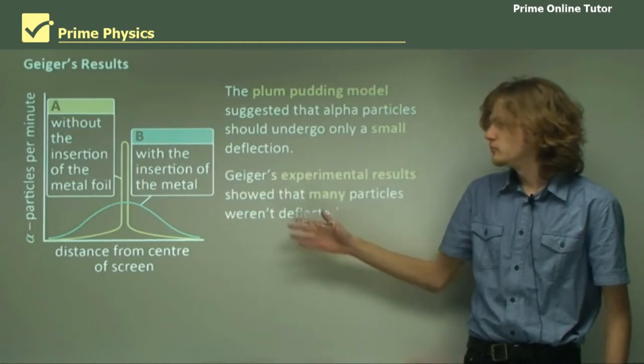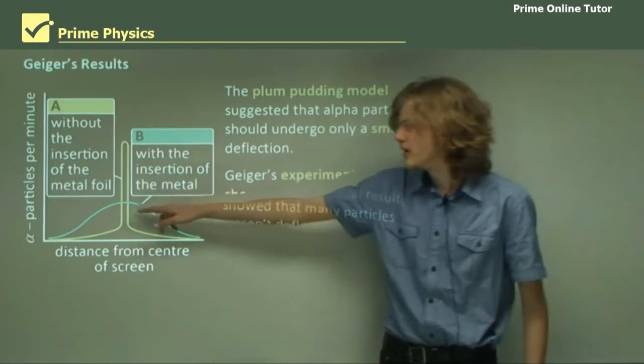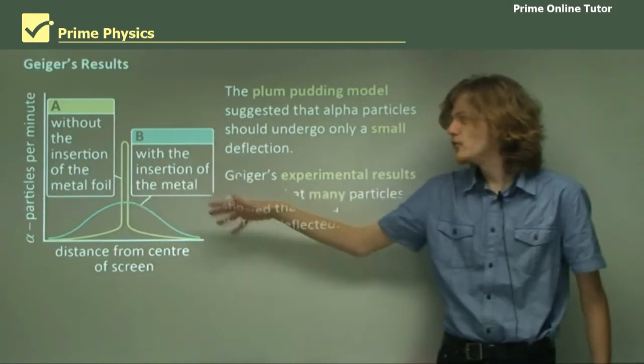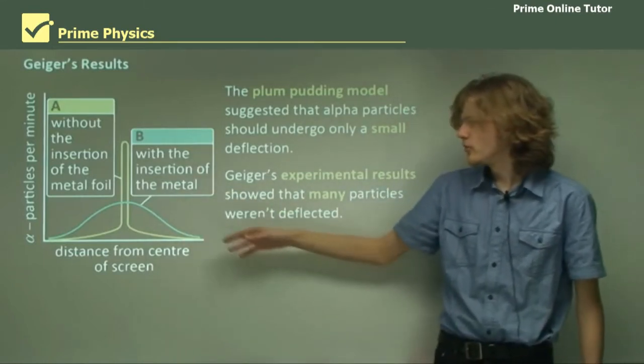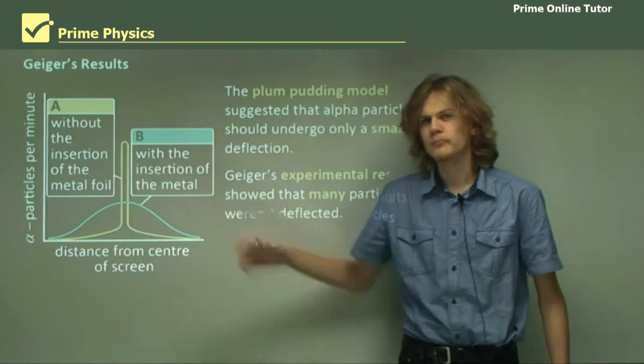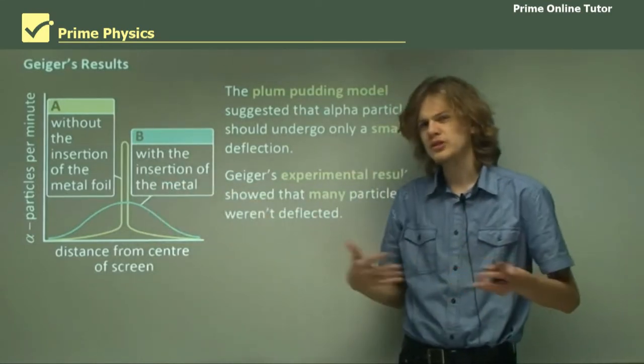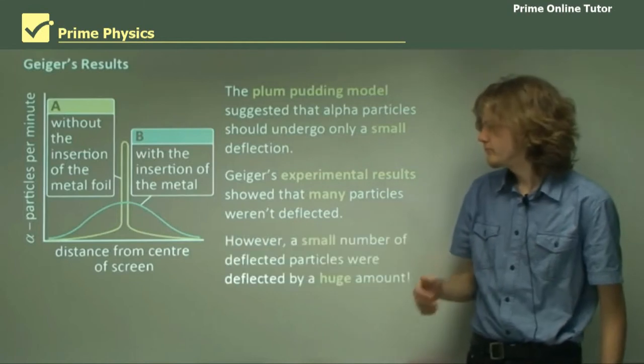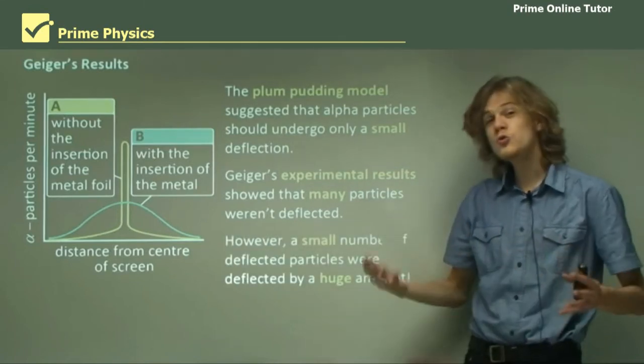Geiger's experiment showed this result here. As we can see, there are many particles that aren't deflected. It's this blue line over here that shows how it changes when the foil is put in. So, there are lots of particles that weren't deflected at all. But most of them were deflected by a little bit, which is okay.